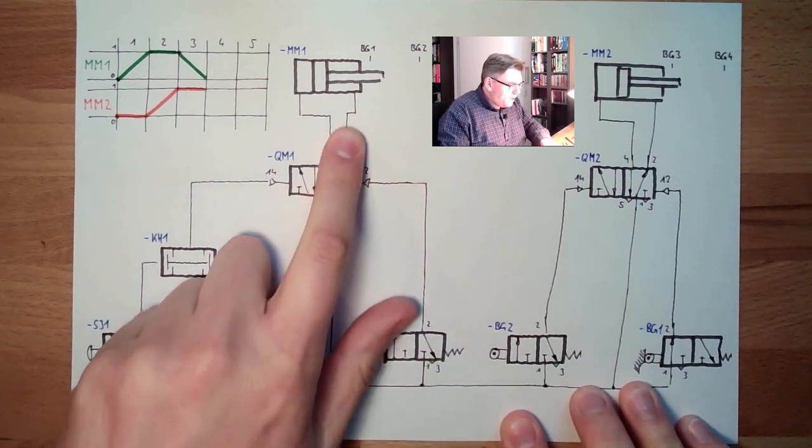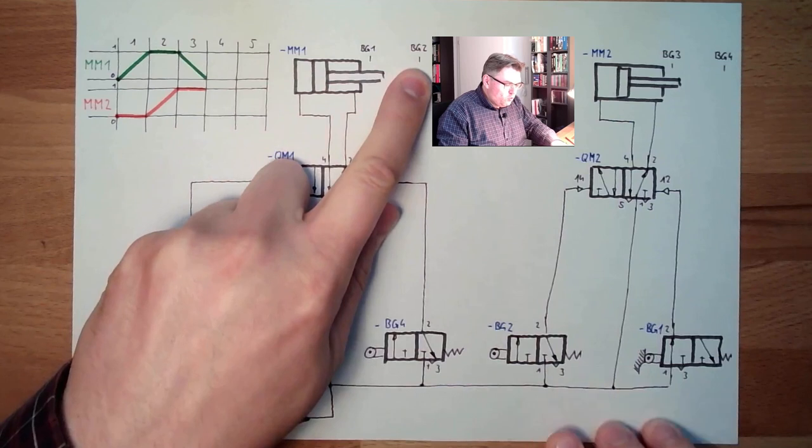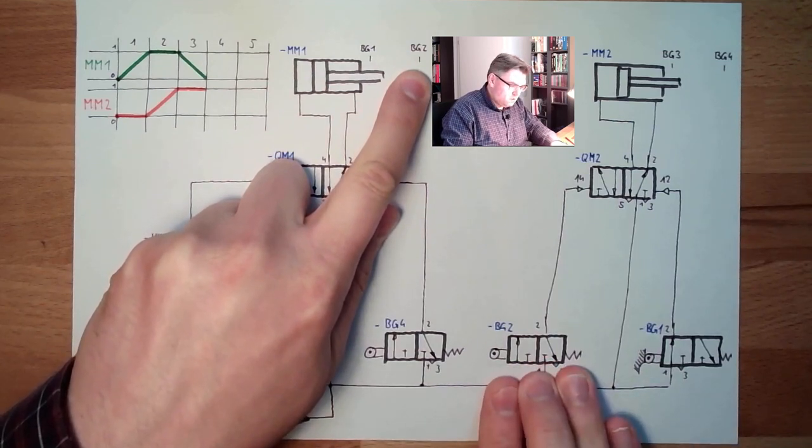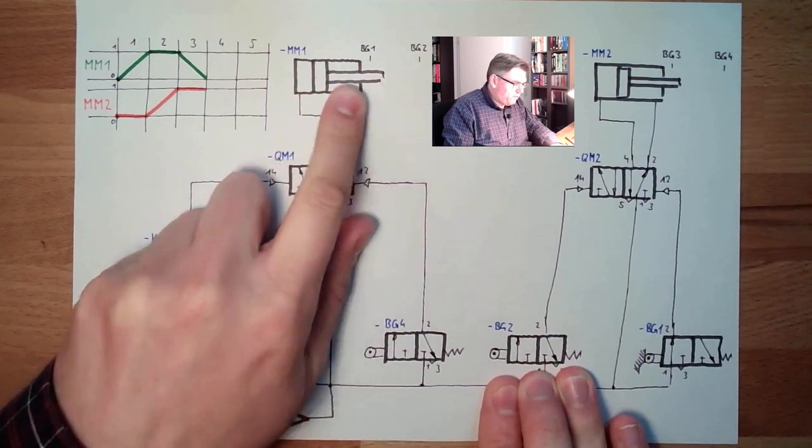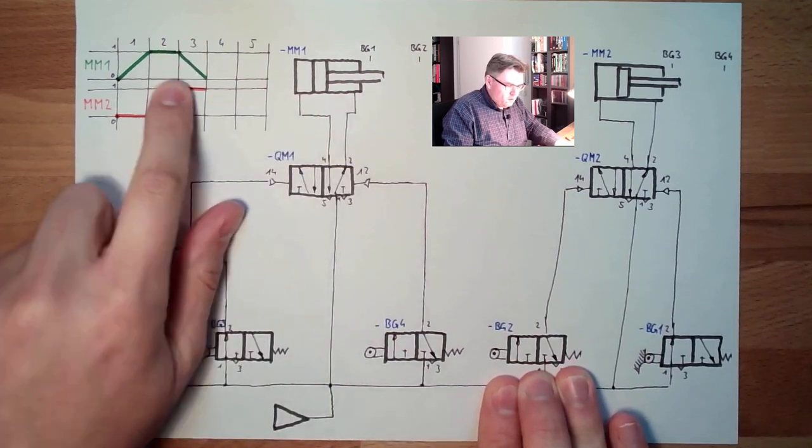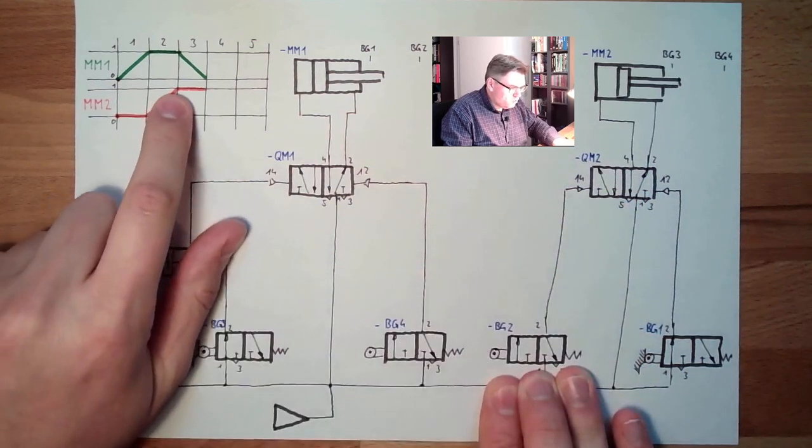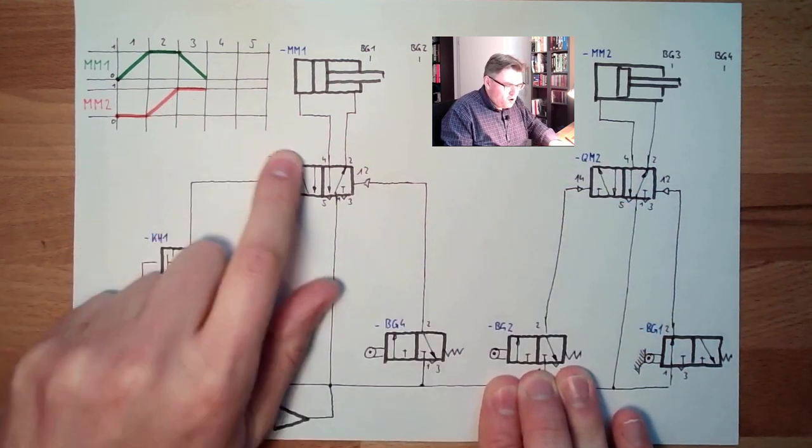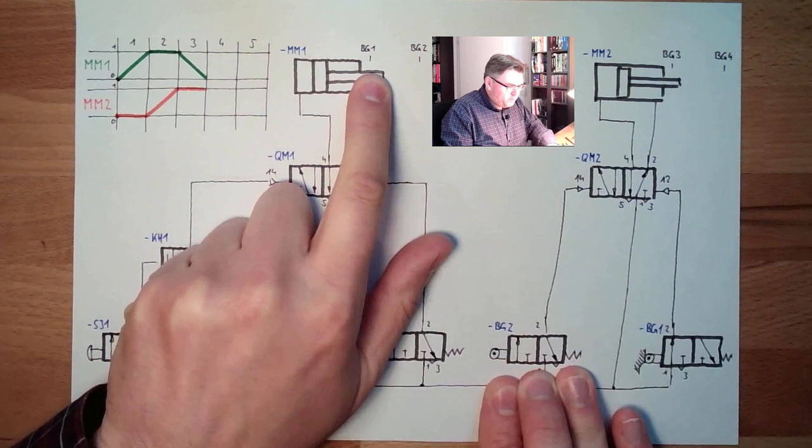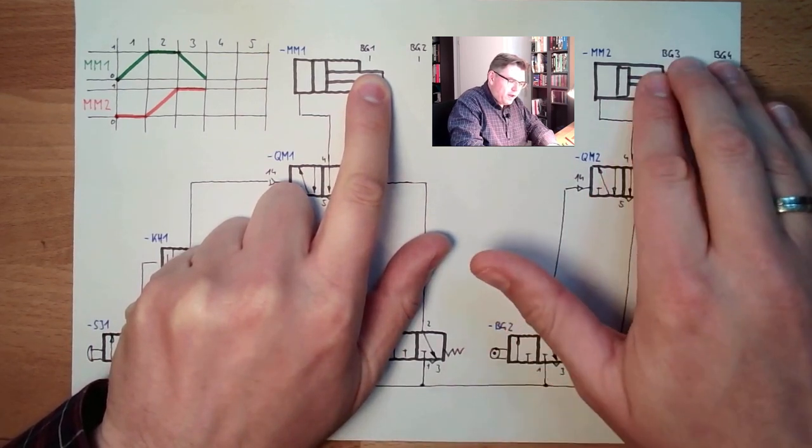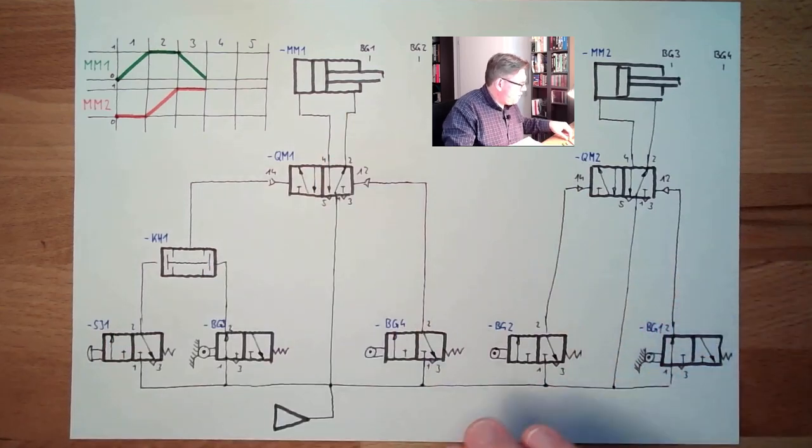This is switching now, this is traveling. PG2 will be relieved, so it will go back in this position. Nothing much will happen here. This will stay because this is an impulse valve, so this will stay at this position. MM2 is staying, and then we will operate PG1. PG1 is operated, switch back, MM2 is traveling inside.